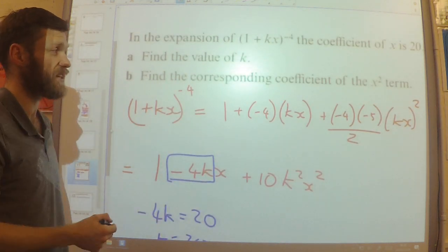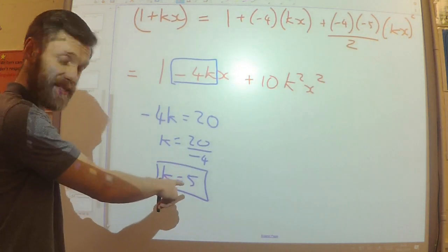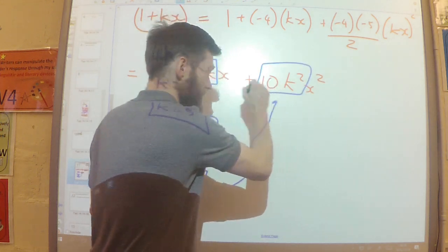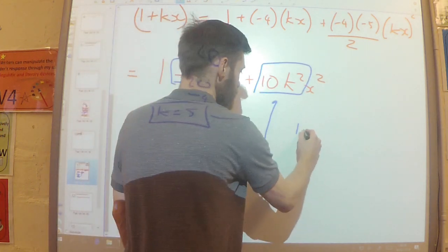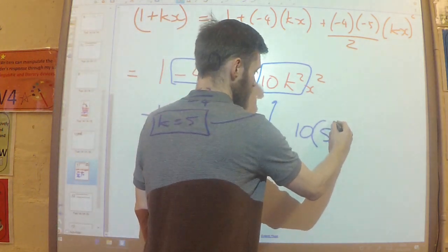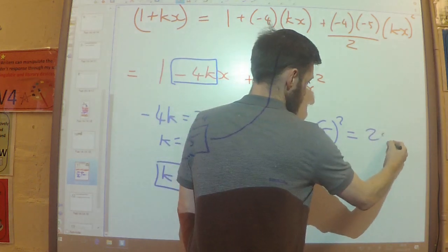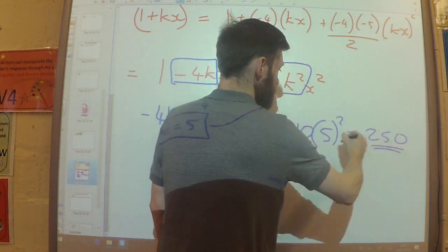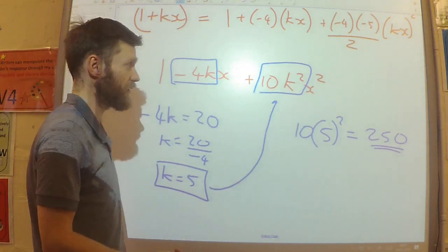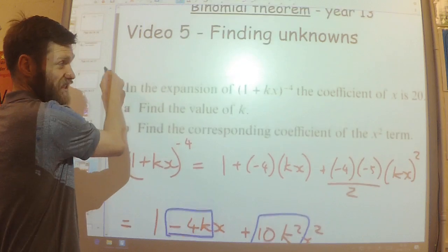Part b, find the corresponding coefficient of the x squared term. So if I now take that and substitute that in to find the coefficient of the x squared term. So 10 times 5 squared. 5 squared is 25. Times 10 is 250. So the coefficient of the x squared term would be 250. There we go. That's all there is to it, really.